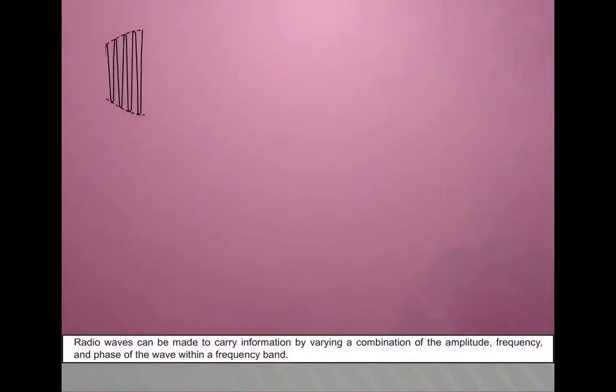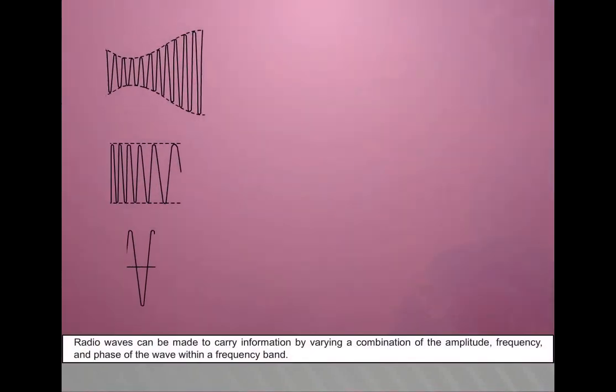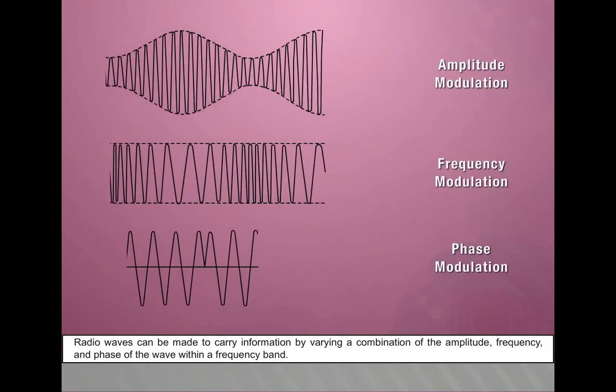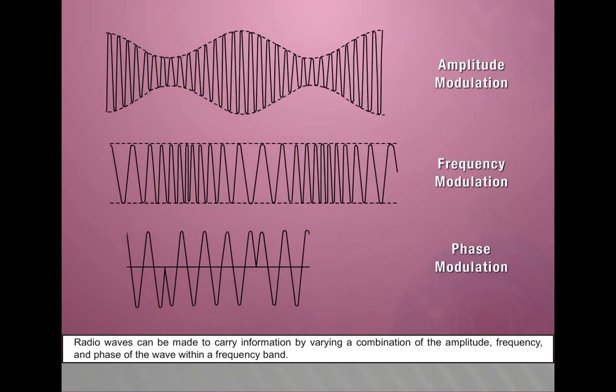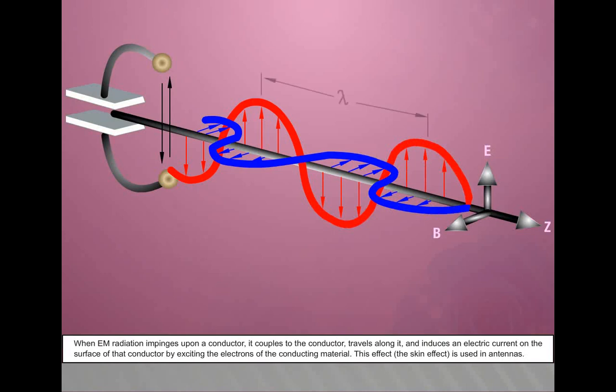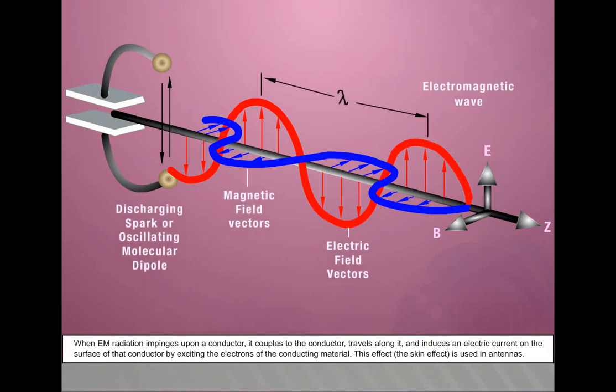Radio waves can be made to carry information by varying a combination of the amplitude, frequency, and phase of the wave within a frequency band. When EM radiation impinges upon a conductor, it couples to the conductor, travels along it, and induces an electric current on the surface of that conductor by exciting the electrons of the conducting material. This effect, the skin effect, is used in antennas.